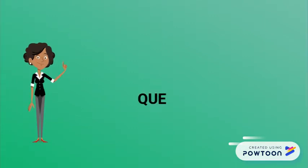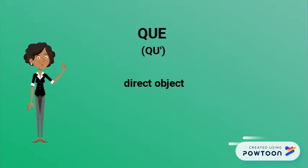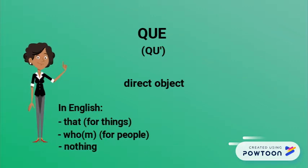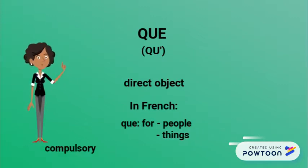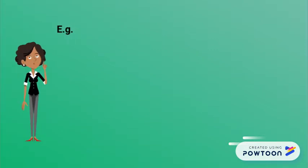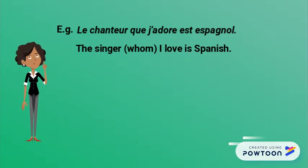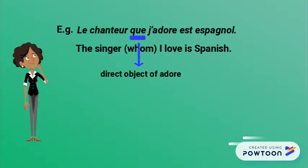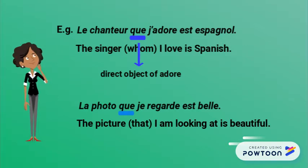The relative pronoun que — or qu' apostrophe before a vowel or a silent h — is used as a direct object. In English, you can use 'that' for things, or 'who' or 'whom' for people, or nothing at all. In French, you always use que for both people and things, and the pronoun is compulsory. For instance: 'le chanteur que j'adore est espagnol' — the singer whom I love is Spanish. Que is the direct object of 'adore.' Another example: 'La photo que je regarde est belle' — the picture that I am looking at is beautiful. Que is the direct object of 'regarde.'